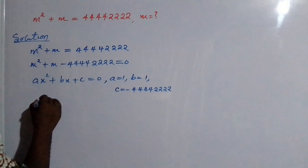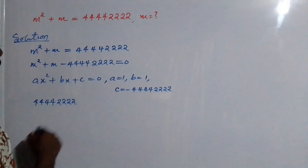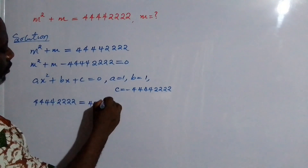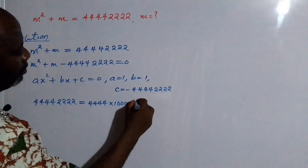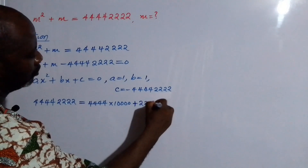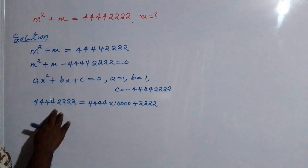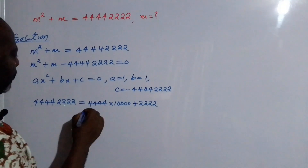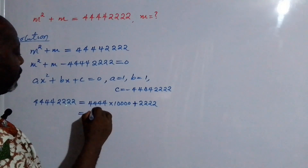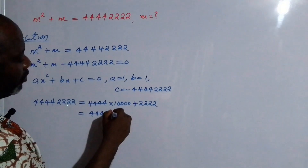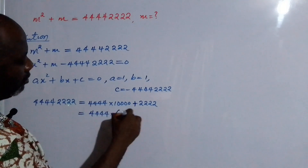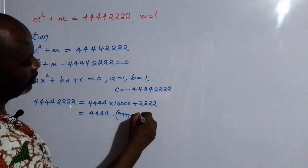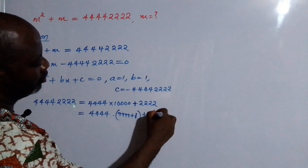We work on 44,444,222. What I'm going to do is break it up into 4444 times 10,000 plus 2222, because multiplying and adding gives us that number back. From here I'll further simplify: I'm going to rewrite 10,000 as 9999 plus 1, giving us 4444 times (9999 + 1) plus 2222.